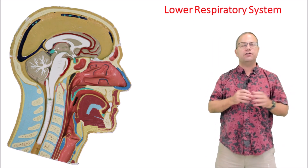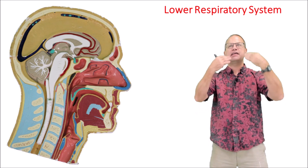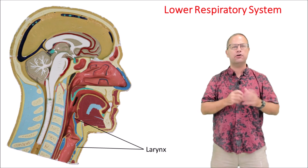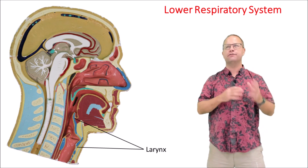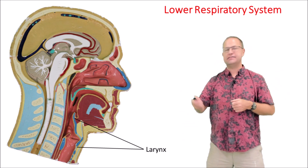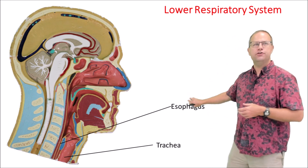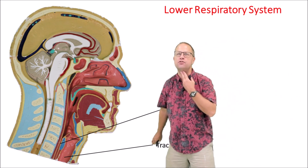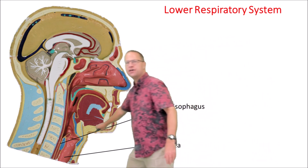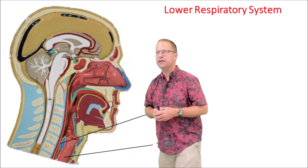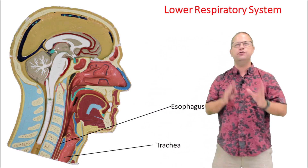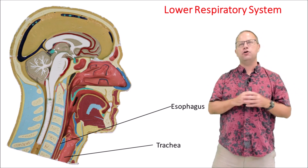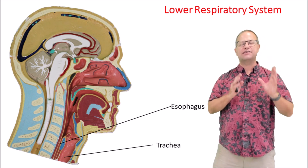Now we're going to talk about lower respiratory zone structures — everything from the larynx downwards. The larynx is a very prominent structure at the superior part of the trachea, and its job is to divert air down the trachea and food and water down the esophagus. The trachea is the most anterior tube, and in back of that is the esophagus, which is pinched shut. The trachea is always held open by cartilage rings, whereas the esophagus is usually pinched shut unless we're swallowing something.